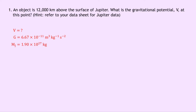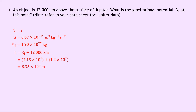The mass of Jupiter from the data sheet is 1.90 times 10 to the 27 kilograms. The distance R is going to be the radius of Jupiter, R subscript J, plus the 12,000 kilometers above the surface. Plugging in the radius of Jupiter, we get 7.15 times 10 to the 7 plus 1.2 times 10 to the 7 — writing 12,000 kilometers in meters in scientific notation — giving us 8.35 times 10 to the 7 meters. Writing down our equation for gravitational potential, we get V equals minus GM subscript J divided by R.